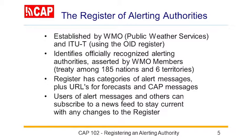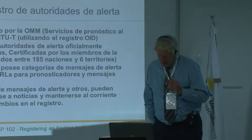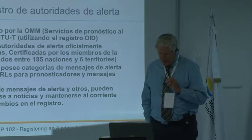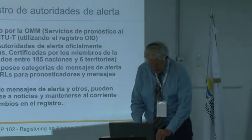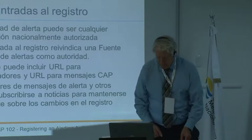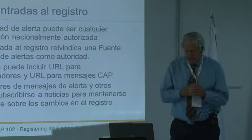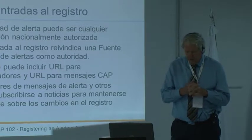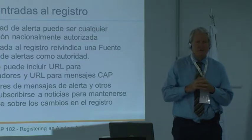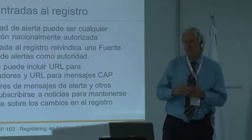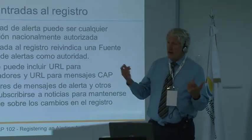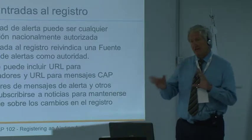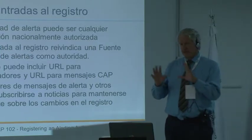In the International Register of Alerting Authorities, we have 191 members — that's 185 nations and six territories. We talked about how PRs are responsible for putting entries in. They are entering only those recognized by the World Meteorological Organization, which is slightly different from the number of nations participating in, for example, the International Federation of Red Cross and Red Crescent Societies — 192 nations versus 185 in the case of the WMO.